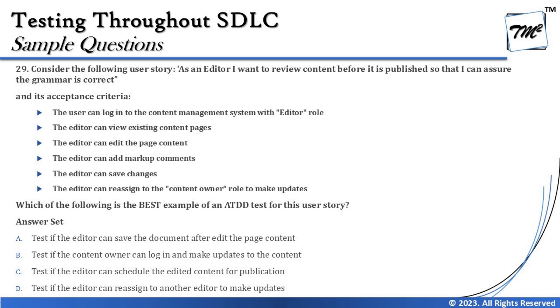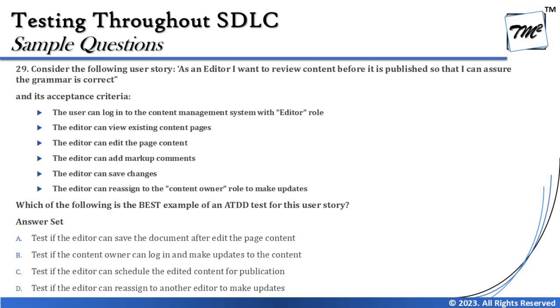The acceptance criteria provided are: the user can log in to the content management system with editor role; the editor can view existing content pages; the editor can edit the page content; the editor can add markup comments; the editor can save the changes; and the editor can reassign to the content owner role to make the required updates. All acceptance criteria appear well-aligned with the user story. The question asks: which of the following is the best example of an ATDD test for this user story?